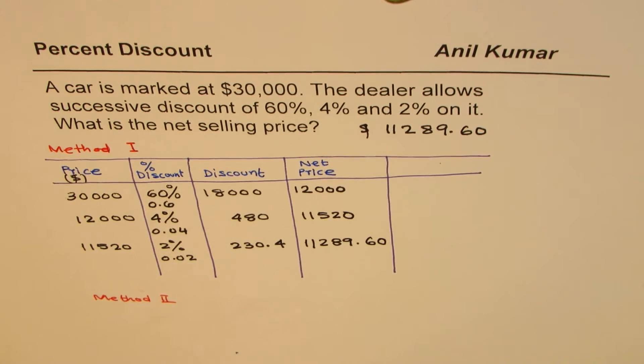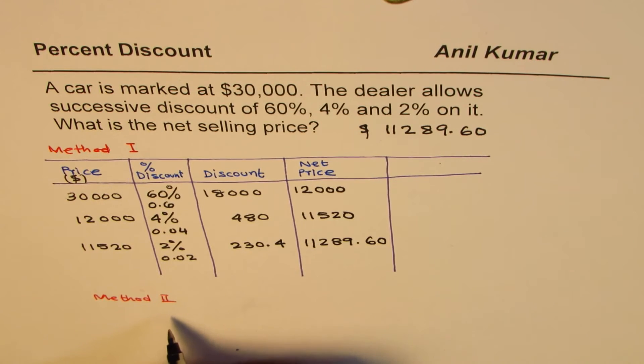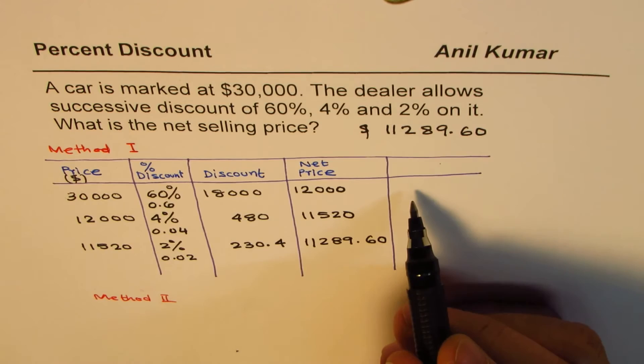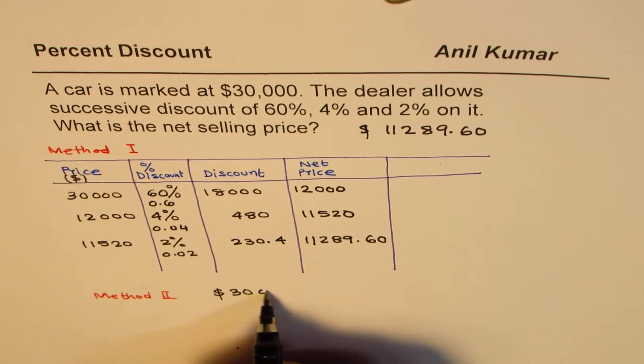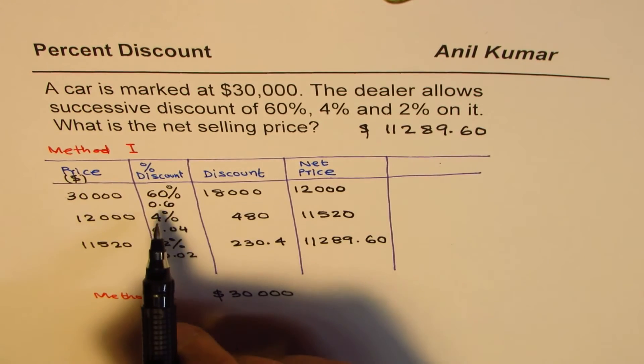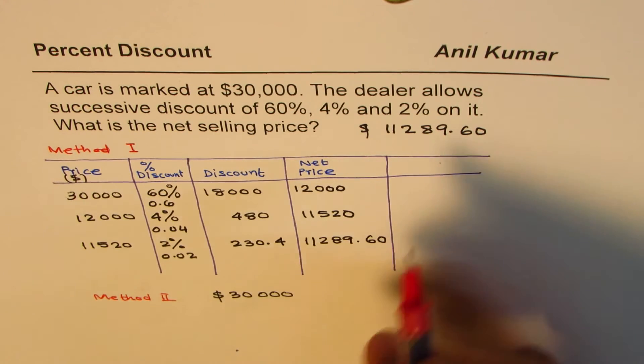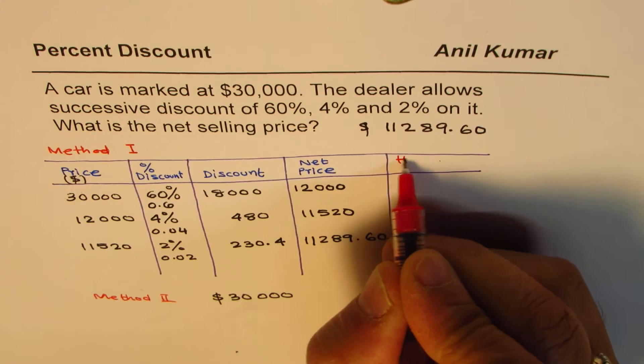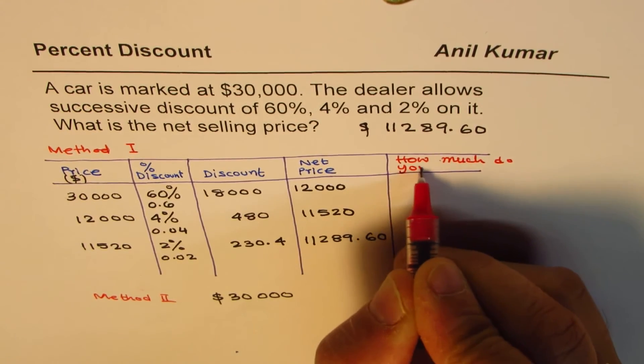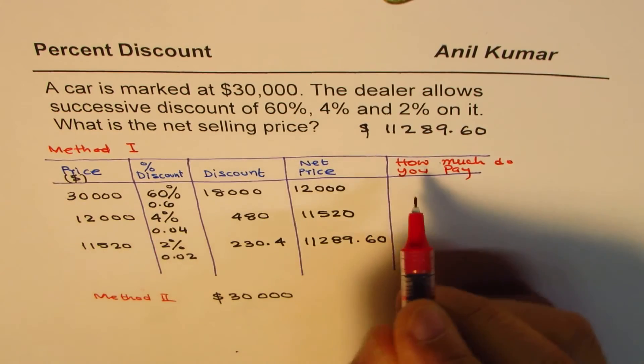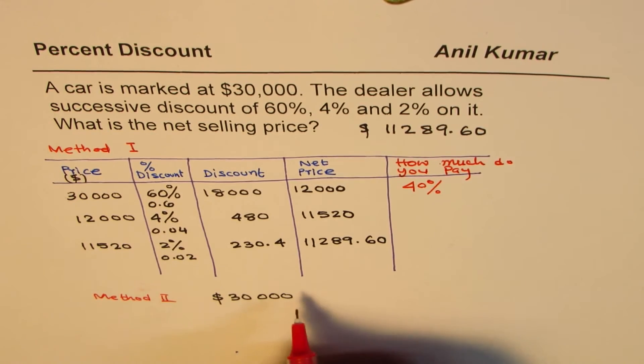So we can see it is $11,289.60. That is how you could do method number one. Now let's see how to do method number two. Method number two is taking into account what you pay. We start with $30,000. If I have a discount of 60%, what do you pay? How much do you pay? This is what we're trying to understand. The question is: how much do you pay?